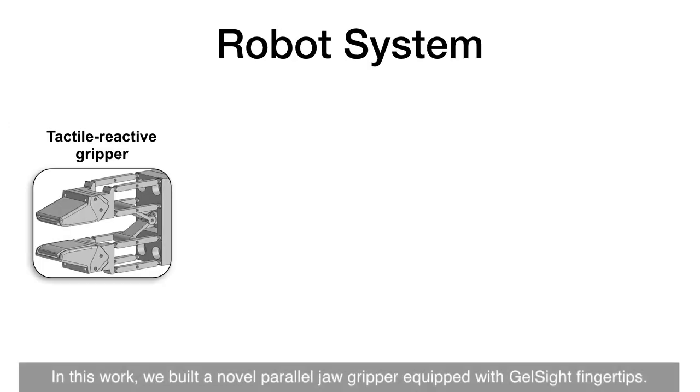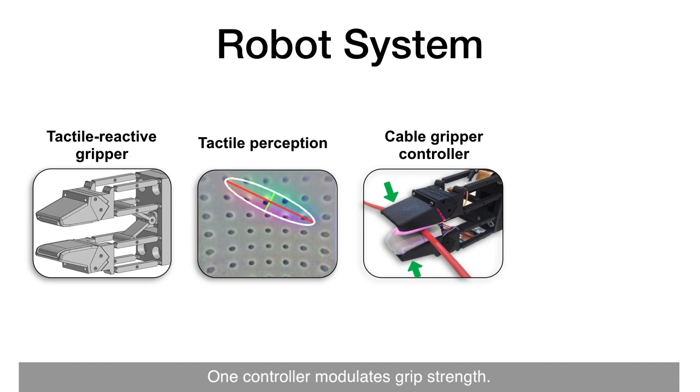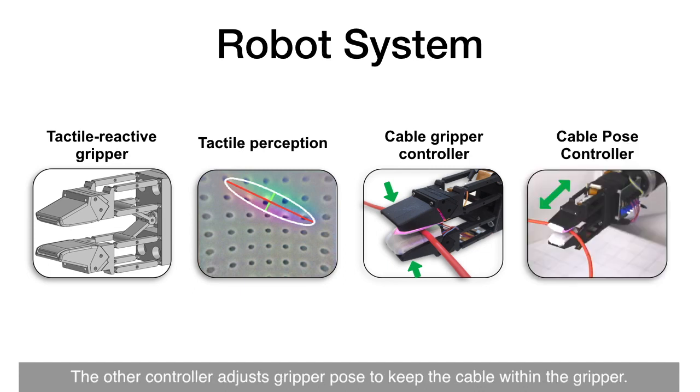In this work, we built a novel parallel jaw gripper equipped with jaw-side fingertips. Tactile perception gives the cable pose and shear force in real-time. One controller modulates grip strength. The other controller adjusts gripper pose to keep the cable within the gripper.